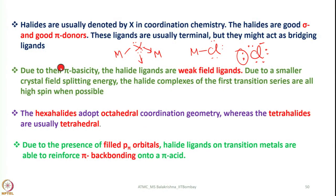With this, let me talk about halogens. In my previous lecture, I initiated discussion on halogens and mentioned the nature of their donor properties. A halide can first establish a covalent bond as an anion, and then, due to the presence of lone pairs of electrons, it can establish another sigma bond.